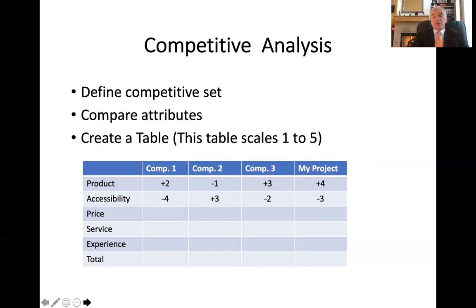For this purpose, I created a table. This table scales from one to five — one being your place is somewhat better than the competitor, five being your place is substantially better than the competitor. So looking at competitor one in this column, your product is two points better on a scale from one to five, but your accessibility is four points below — you are just much harder to find.